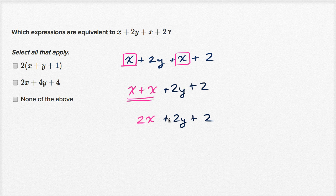Now let's see, out of all of my choices, so this one, this is 2x plus 4y plus 4. So that's not right. I have 2x plus 2y plus 2. So I can rule this one out.